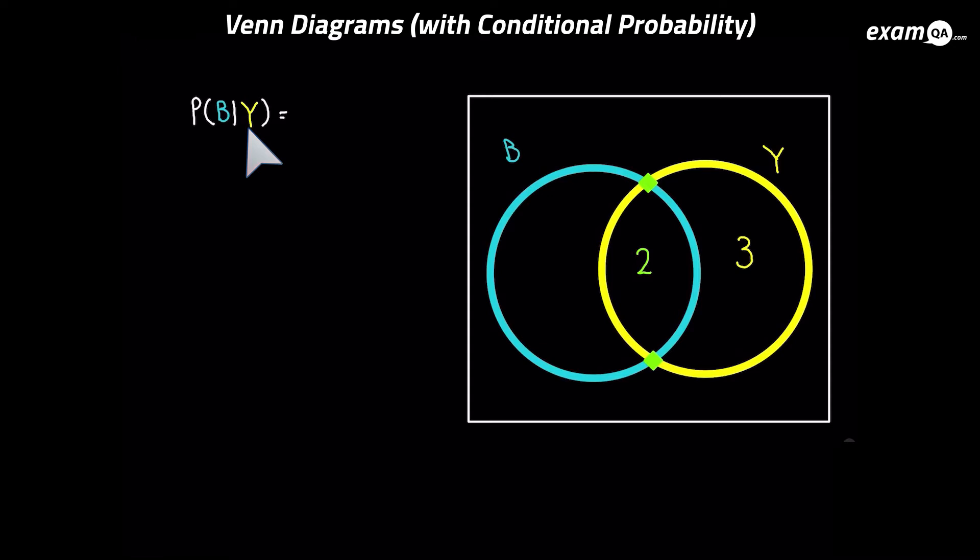But we need to work out the probability of B. So now with these remaining numbers left let's work out the probability of B. And from these numbers only 2 is in B. So it's going to be 2 over the total. Now it's not 11 because all these numbers are gone. It's over 5. So it's 2 over 5. So it wasn't too bad.